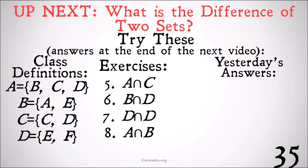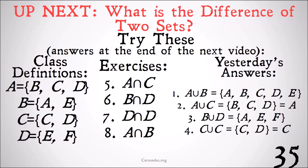If you want the answers to yesterday's problems, here they are. The union of A and B—these are the same class definitions, so you can refer to it here if you want to try it out—the union of A and B is {A, B, C, D, E}.